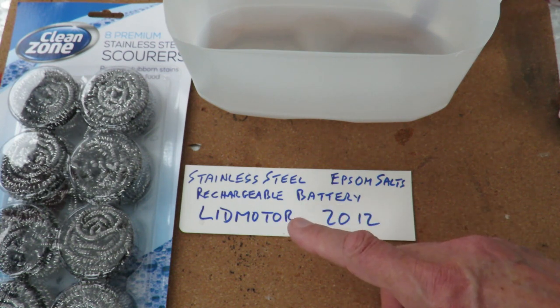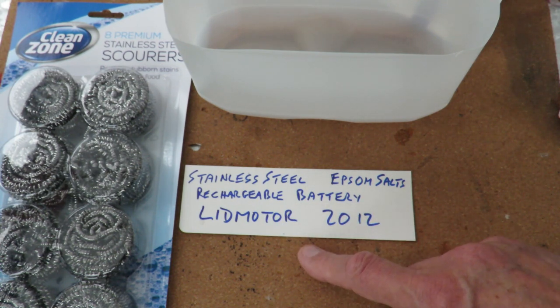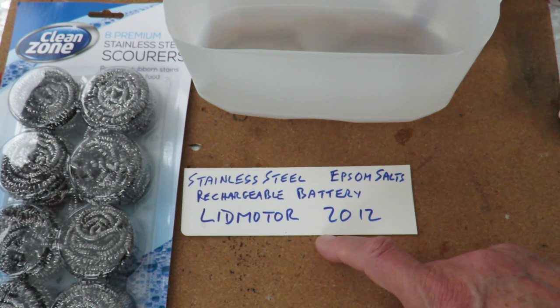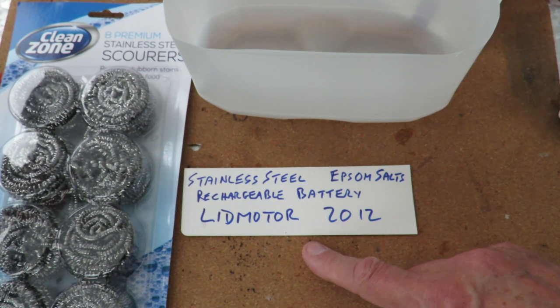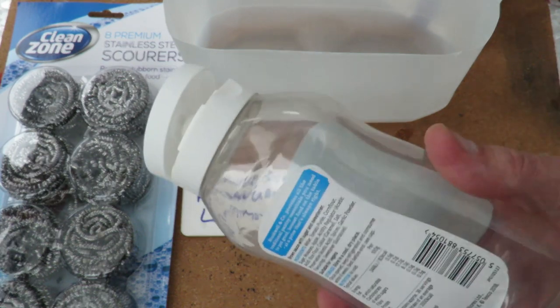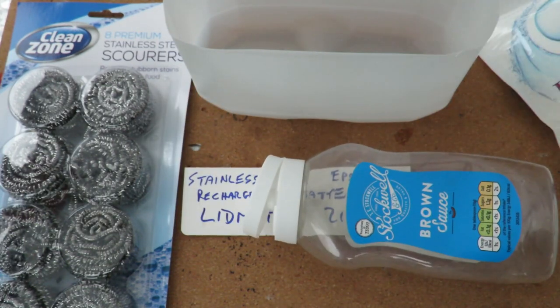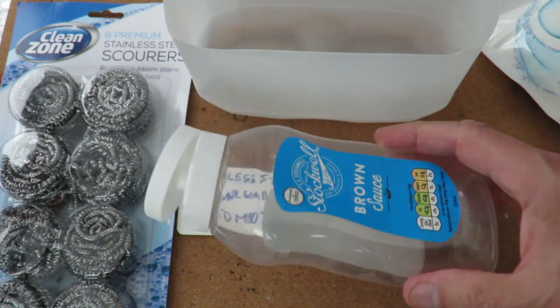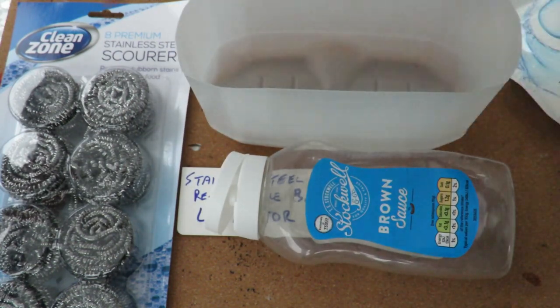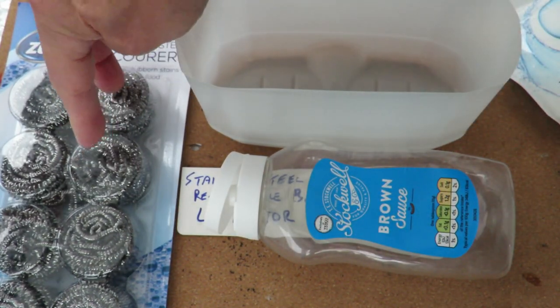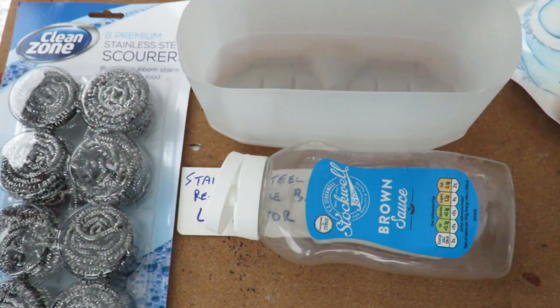The circuit that Lidmotor uses is probably one of those joule thief type things where you actually get an LED lighting from very low power. Anyway, that's what I'm going to do: mix up some Epsom salts, try and make a saturated solution, chuck it in there, a couple of them in as the anode and cathode, and we'll see how we go.